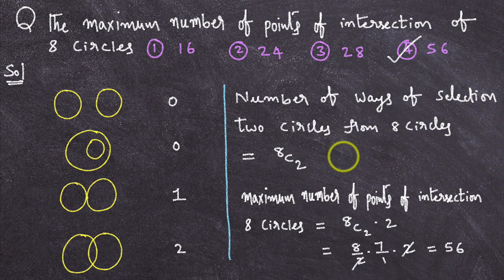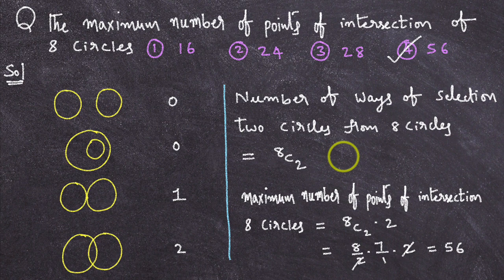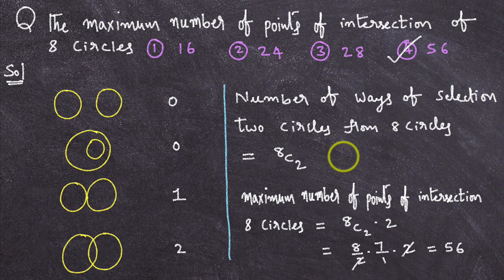What is this 28? In 28 ways, you can select 2 circles from 8 circles. So, what is the conclusion?